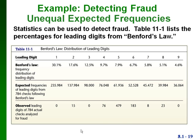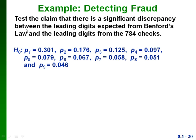Here's another example where our expected frequencies aren't all equal. This is called Benford's law: if we look at leading digits, these are the frequencies that tend to occur. This can be used to detect fraud — we looked at 784 checks from a company and examined the leading digits. The expected and observed frequencies are very different, and notably the digit 5 in the observed frequencies had a much higher frequency than expected. That could mean someone was writing checks for $500 or $5,000, which would be likely if there was some kind of fraud. The claim is that there's a significant discrepancy between the leading digits expected from Benford's law and the leading digits actually found in the 784 checks.